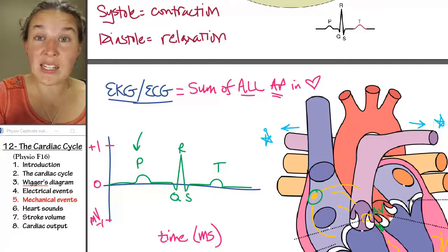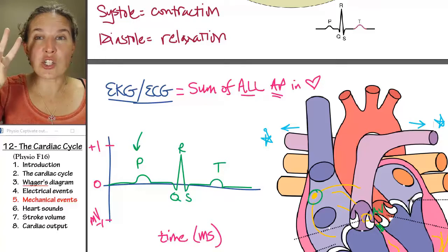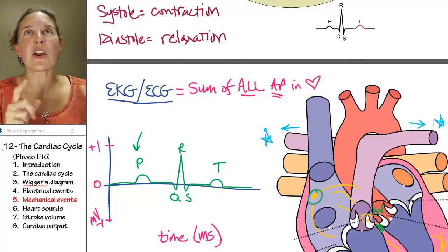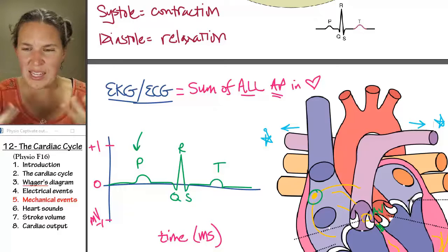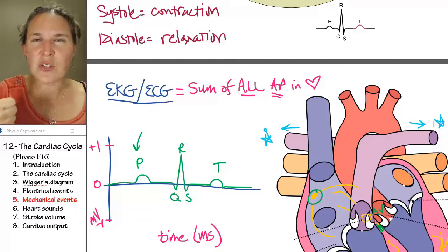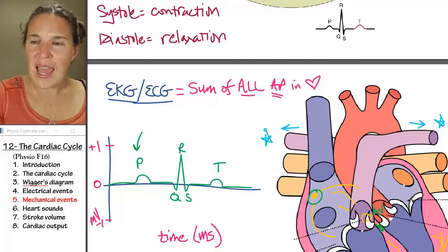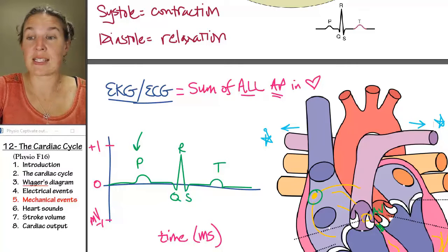We're going to look at contraction and relaxation. We're going to look at the two characteristics that result from contraction or that we can evaluate during contraction and relaxation. And those are pressure and volume. And we can talk about pressure and volume because we're talking about fluids here inside the heart.